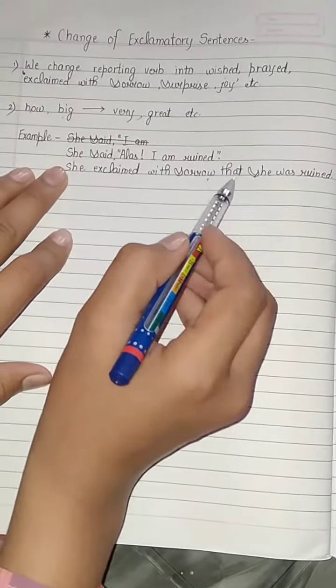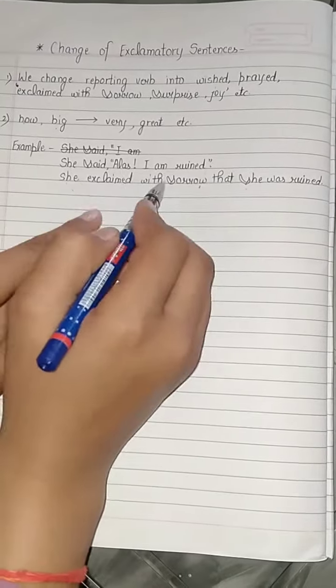So here, as 'I' is the first person, it will change according to the subject, so it is 'she.' And 'am' in the past will be 'was,' and ruined.